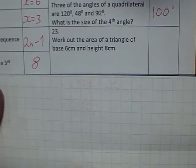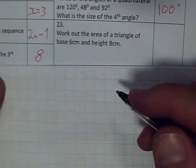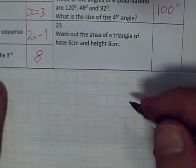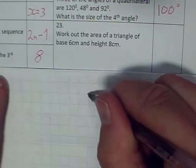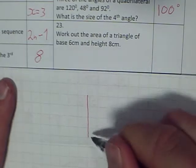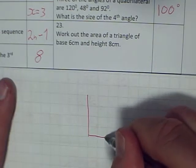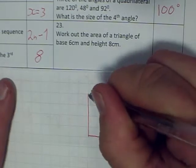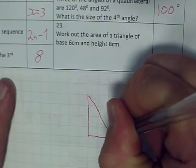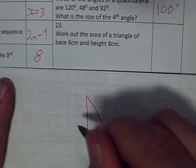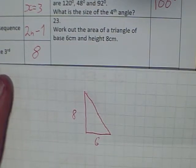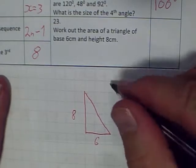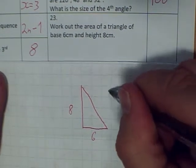Okay, work out the area of a triangle of base 6 centimeters and height 8 centimeters. So it's any old triangle. Base 6, height 8. Imagine it a bit like this: base 6, height 8. That's what I'm going to imagine anyway. So it's about 6 by 8. I haven't tried to do that to scale, any old triangle.